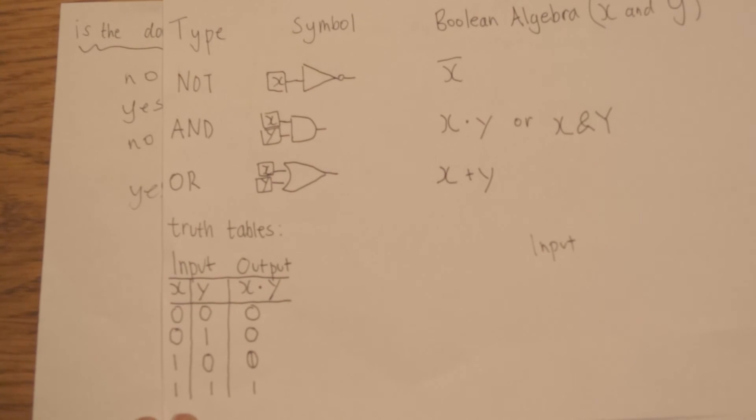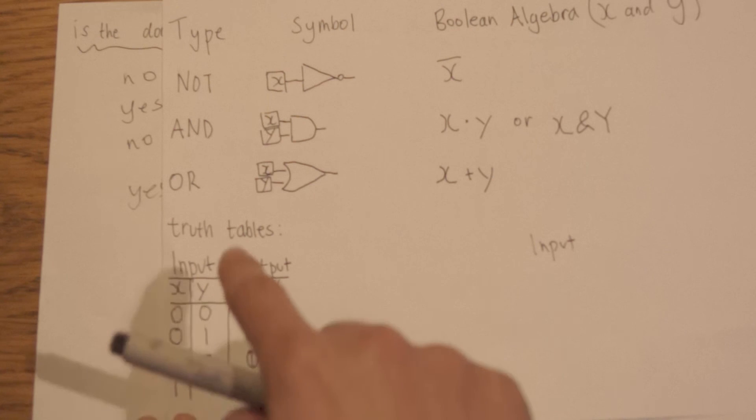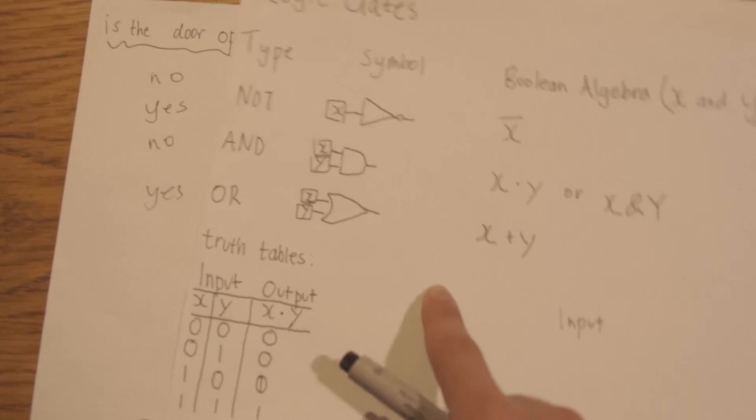Now this is implementing this into our burglar alarm. We can say none of the doors are open, then zero. If one of the doors are open and the window is not smashed, still don't open it because it's an AND gate, not an OR gate.